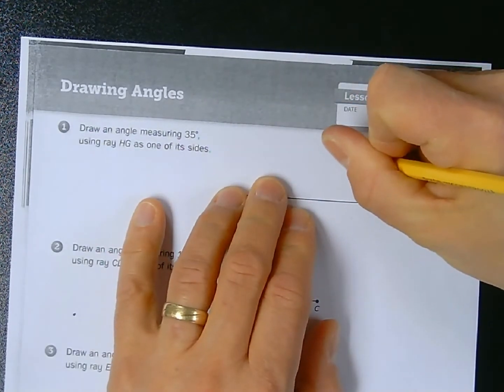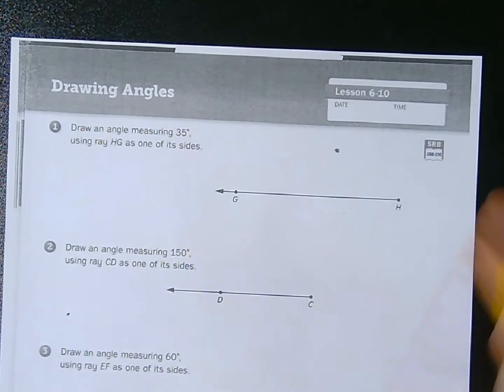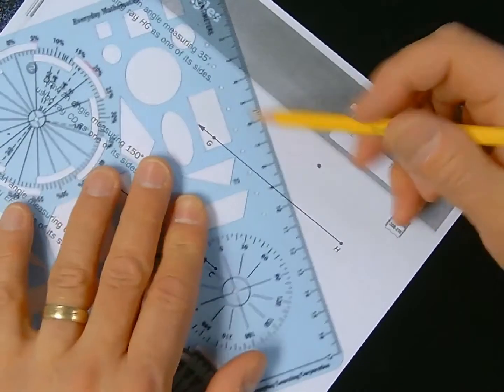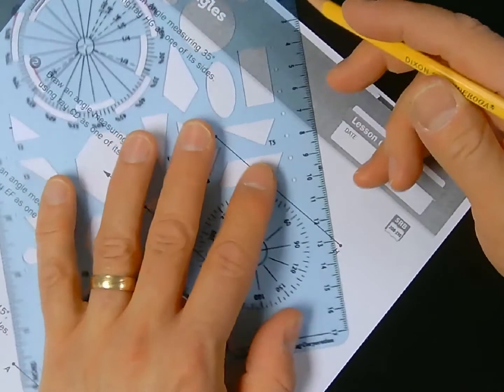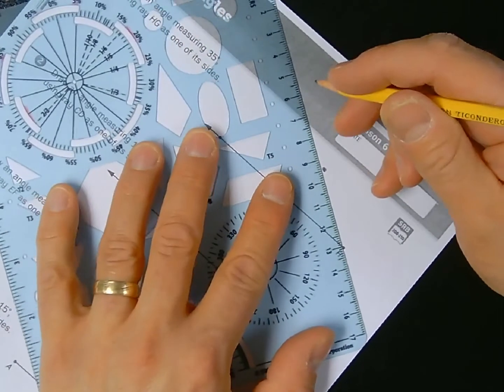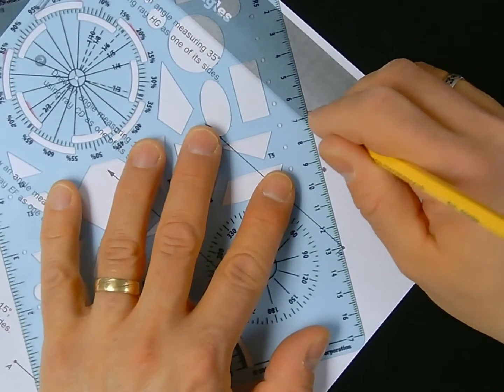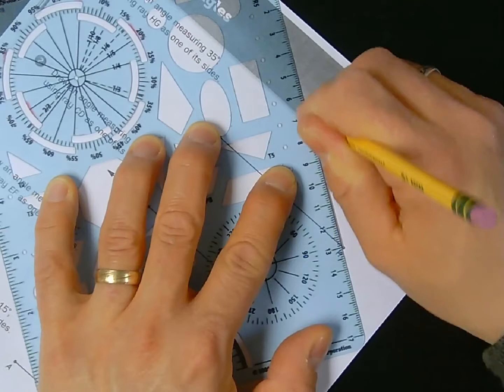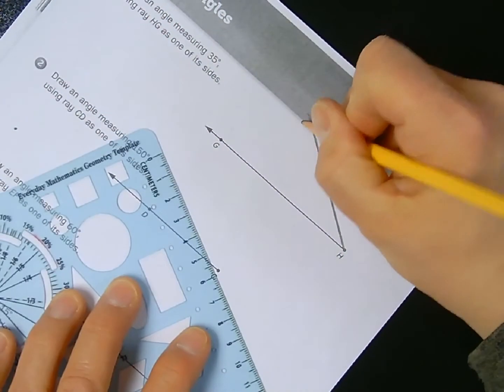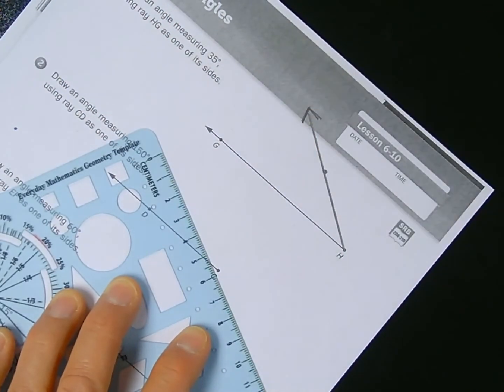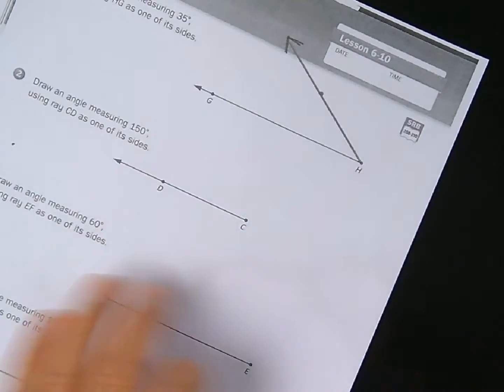Now that I've got my point, I can connect the dots. So I'm going to just use the edge of my template, otherwise known as a straight edge. I'm just going to draw a straight line. I'm going to make it a ray by giving it an arrowhead at the top.